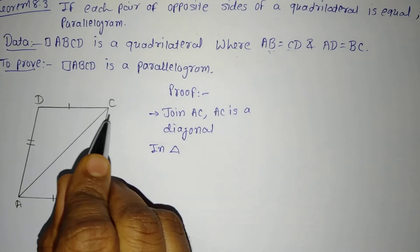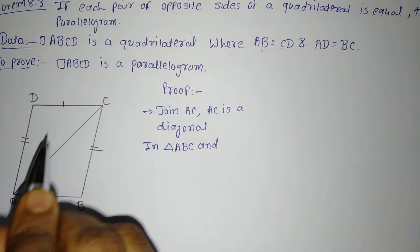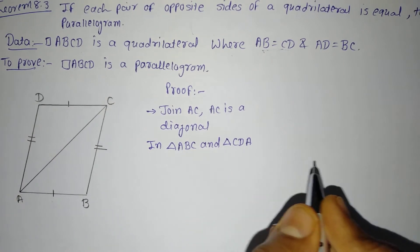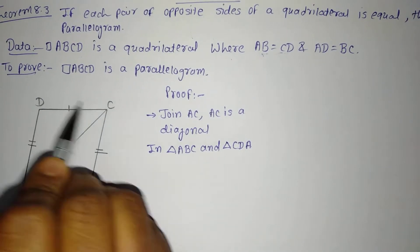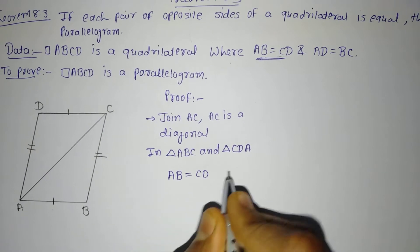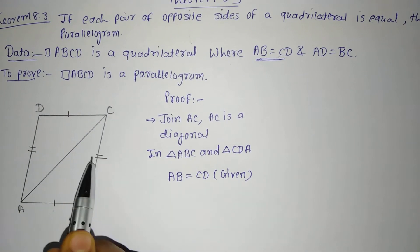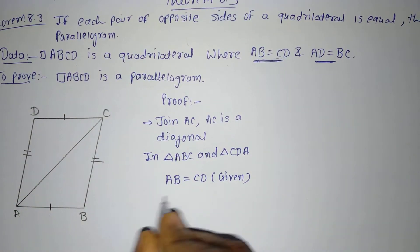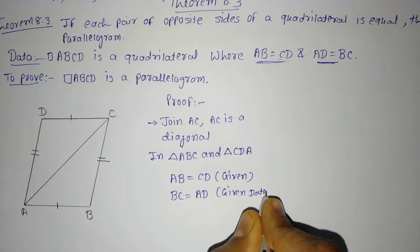The first triangle is triangle ABC and the other (upper) triangle is triangle CDA. In triangle ABC and triangle CDA: side AB and side CD are both equal as given in the data, so AB is equal to CD (given). Also, side BC and side AD are equal as given — BC is equal to AD (given). And AC is the common side for both triangles, so AC is equal to AC (common side).